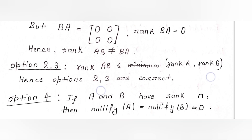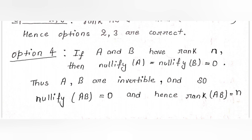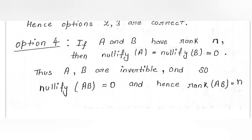Moving to Option 4: if A and B have rank n, then the null space of A and the null space of B are both equal to zero, meaning A and B are invertible. Therefore AB is also invertible, its null space is zero, and hence rank(AB) = n. So Option 4 is also correct.